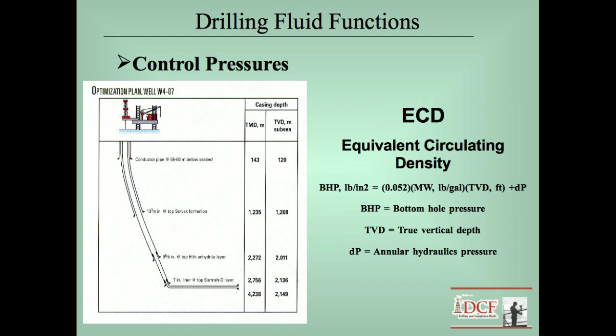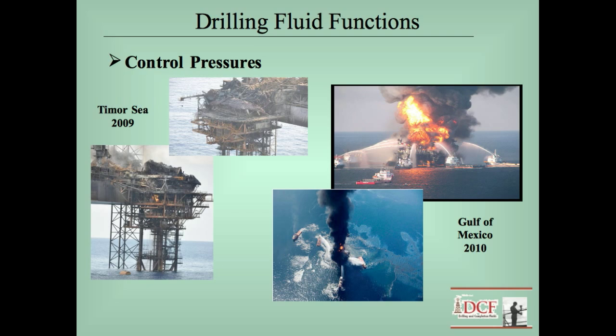The same equation is used to calculate the static pressure. Then the amount of pressure imparted by the pump, called the annular pressure drop, is added to calculate the ECD, or the equivalent circulating density. We control the mud pressure on the wellbore — the hydrostatic pressure plus the ECD — to prevent blowouts like those which occurred in 2009 offshore Australia and in 2010 in the Gulf of Mexico.